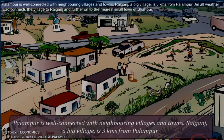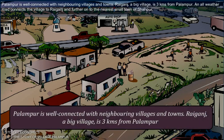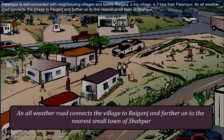Palampur is well connected with neighboring villages and towns. Rayganj, a big village, is 3 kilometers from Palampur. An all-weather road connects the village to Rayganj and further on to the nearest small town of Shahpur.